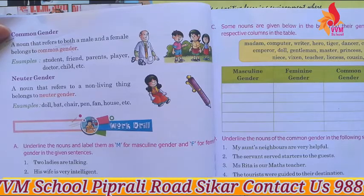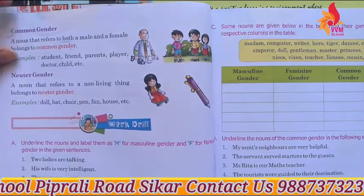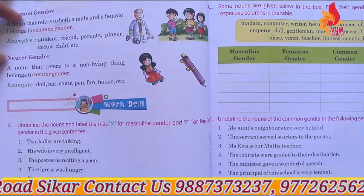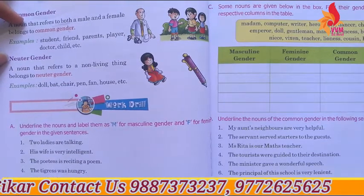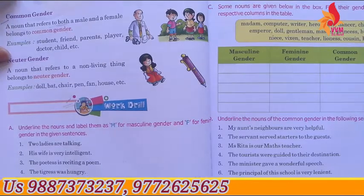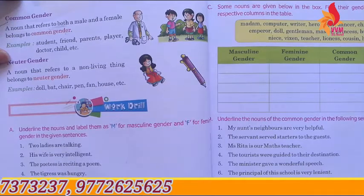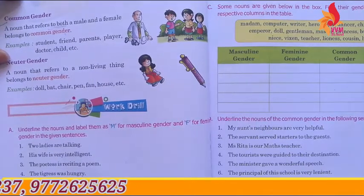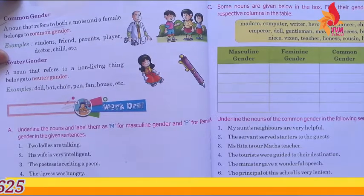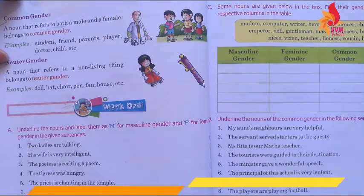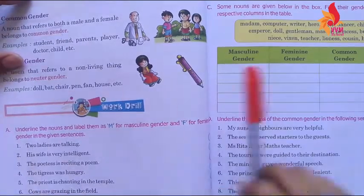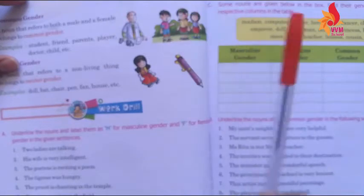Neuter gender is used for non-living things. Non-living things cannot change on their own — they cannot walk, sit, stand, eat, or increase themselves. They cannot breathe — no inhalation or exhalation. So they are non-living things. For example, pen.